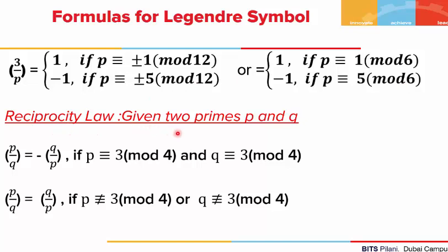Moving on to the reciprocity law. If we are given two primes p and q, then (p/q) can be reversed to (q/p). If both p and q are congruent to 3 mod 4, then we invert but get a negative sign. If any one of the two congruences is not satisfied — that is, p is not ≡ 3 (mod 4) or q is not ≡ 3 (mod 4) — then (p/q) = (q/p). All these properties are sufficient to find any Legendre symbol.